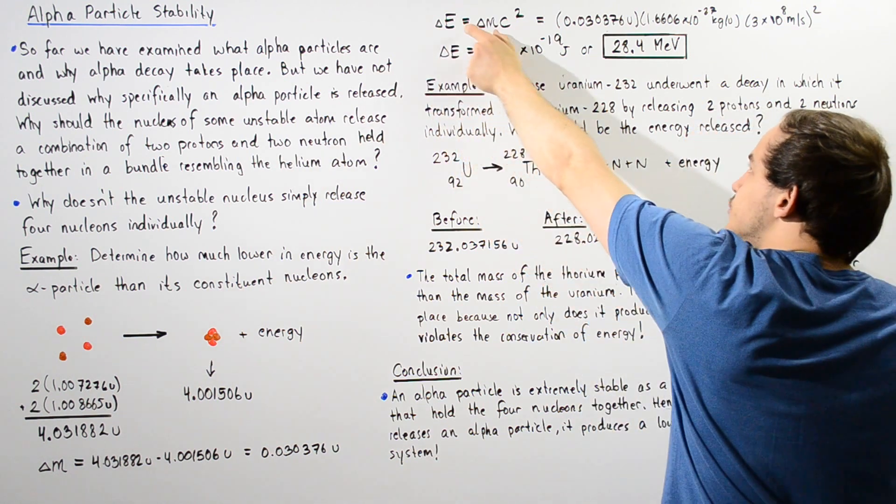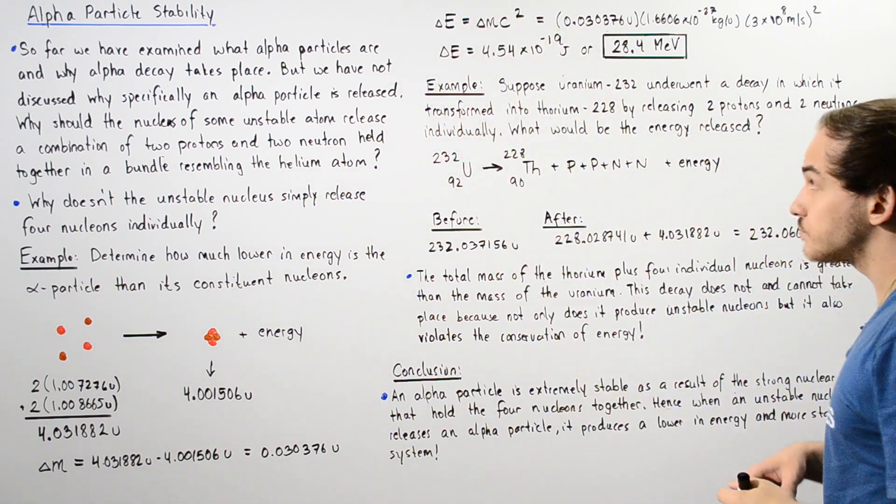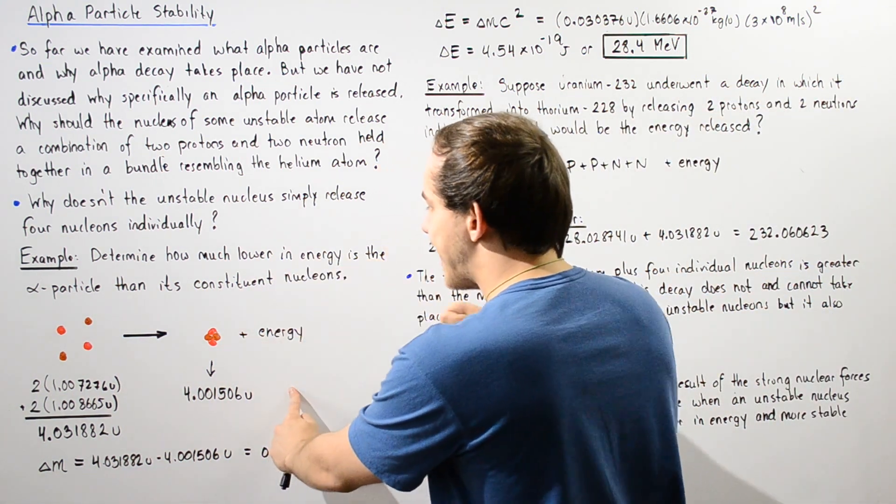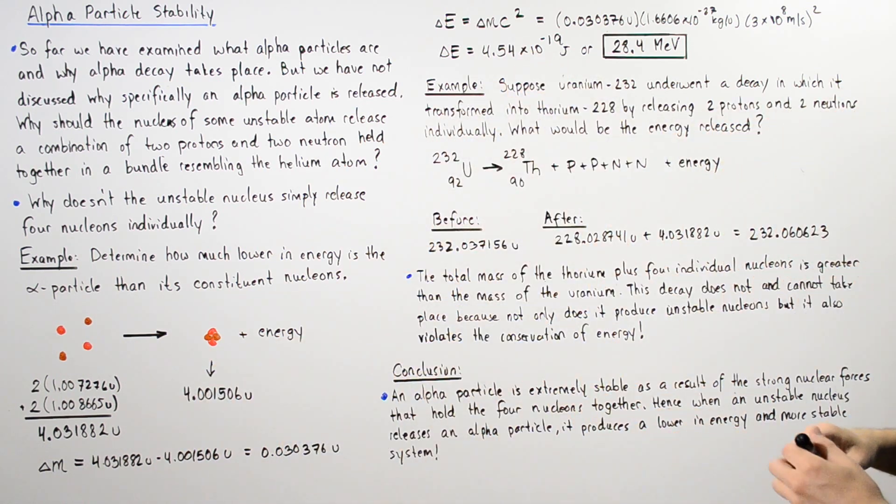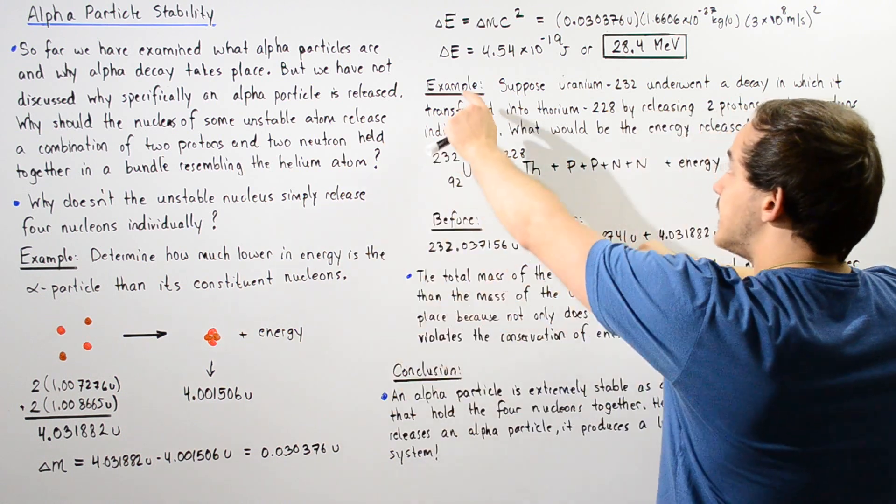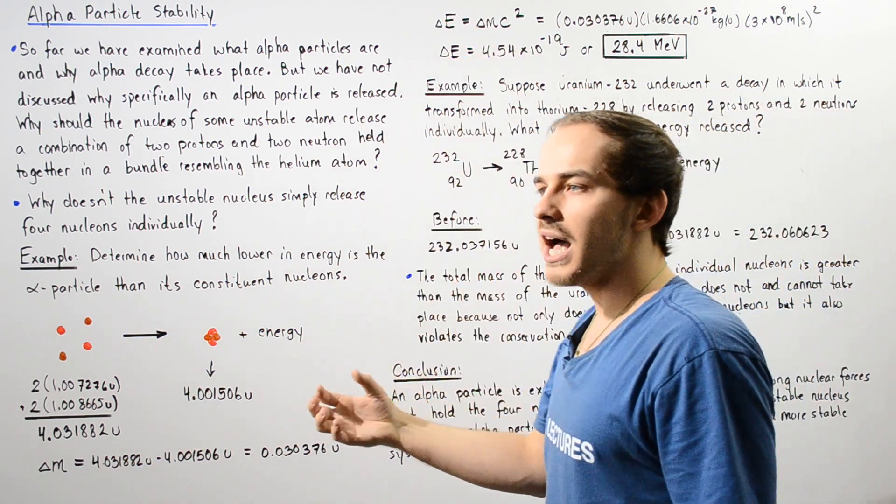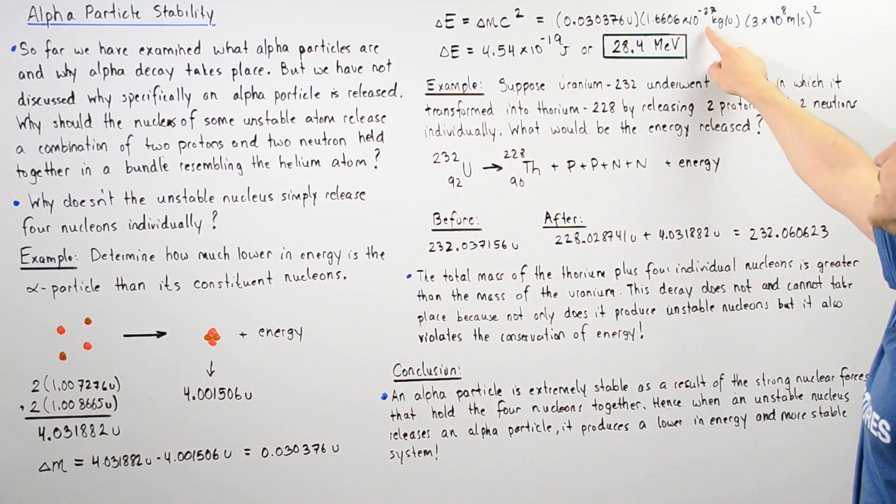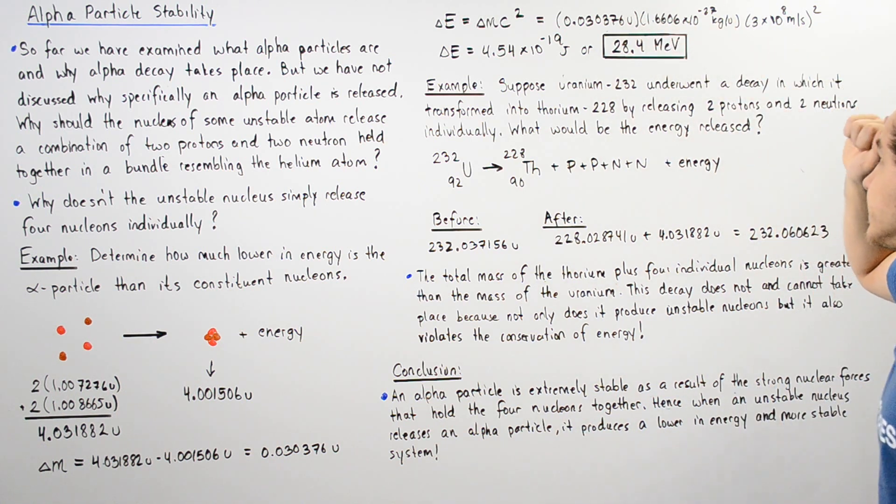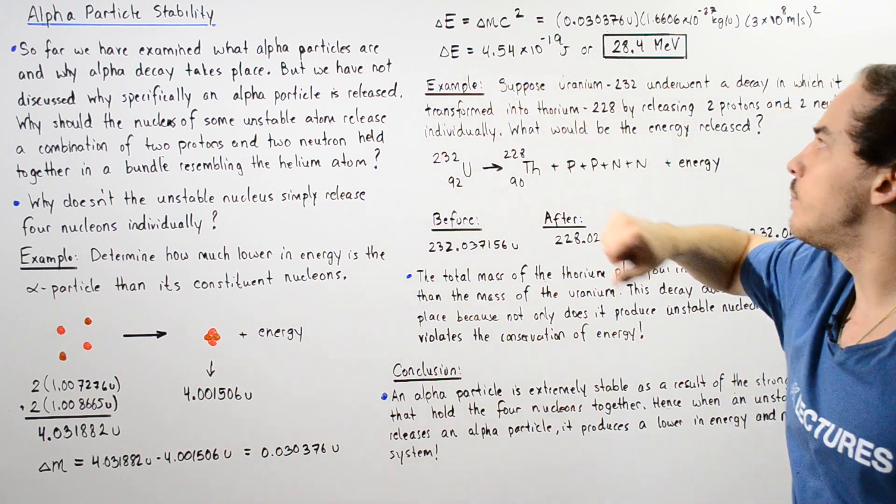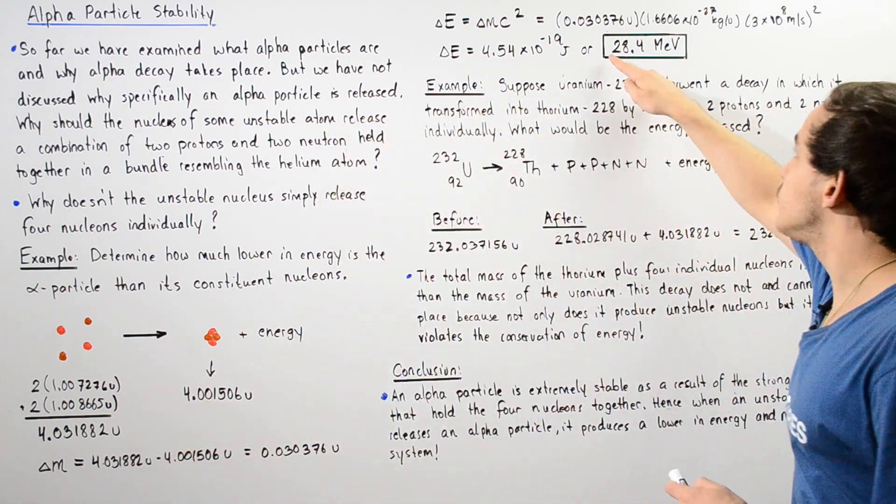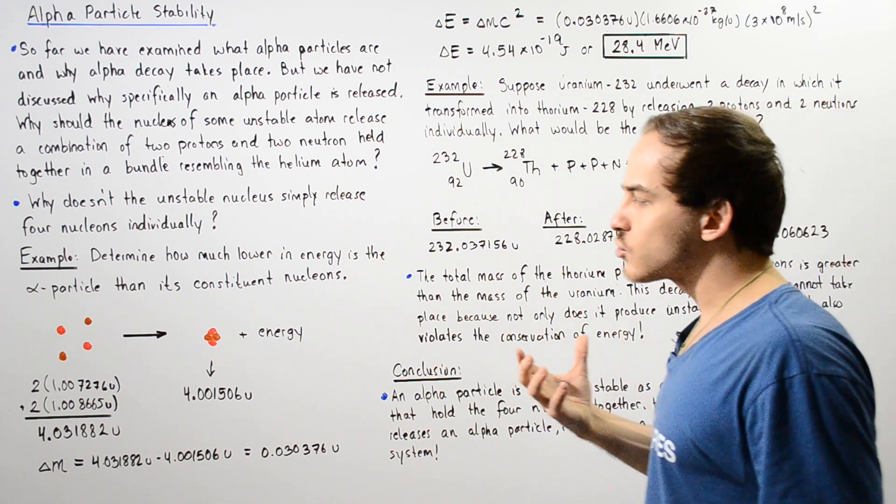So change in E is equal to change in M multiplied by C squared, where the C is basically the speed with which this electromagnetic radiation travels. It's the speed of light in a vacuum. So we plug in this quantity into delta M, but we have to multiply by the conversion factor. We have to convert from Unified Atomic Mass Units to Kilograms by multiplying by this quantity. And we multiply that by the square of the speed of light in a vacuum. And we get about 4.54 times 10 to negative 12 joules. And that is equivalent to about 28.4 mega electron volts.